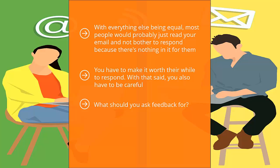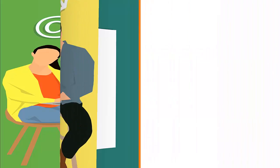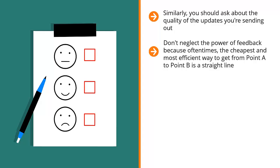What should you ask feedback for? Ask how your squeeze page can be made better, but break down the squeeze page elements one by one. You can't just say 'how can I improve my email list recruitment page?' — that's too broad. Instead, look at different elements: ask 'am I using the right graphic?', 'is the text easy to understand?', 'is the value proposition behind the incentive I'm giving away very clear?' Similarly, ask about the quality of the updates you're sending out — specifically, what improvements should you make for them to forward your emails to people they know.